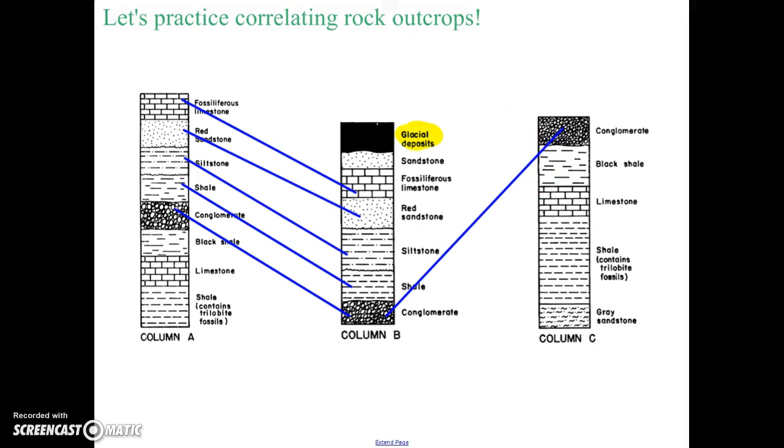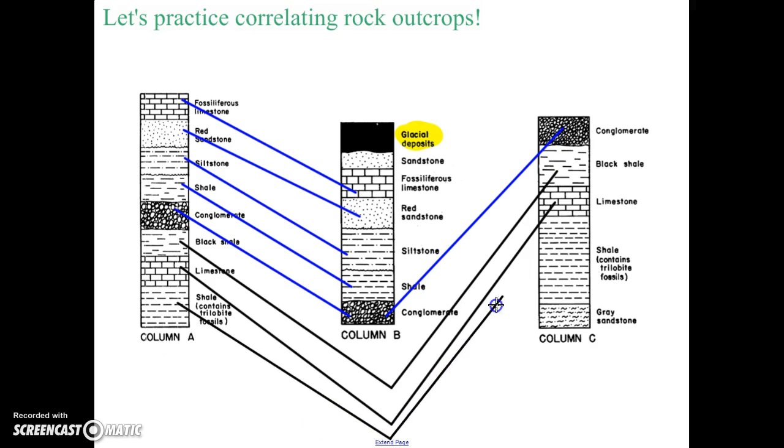Now, let's work down the column. Let's go underneath that conglomerate. There's nothing below column B, so we ignore that. But I see black shale here and I see black shale here. And then I see limestone and I see limestone. I see shale containing trilobites and shale containing trilobites, which leaves us with this gray sandstone. The gray sandstone, therefore, has to be the very oldest layer that we're looking at.